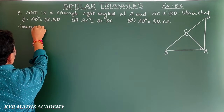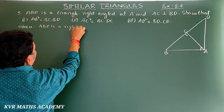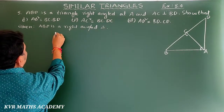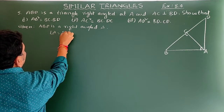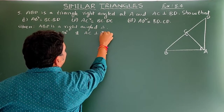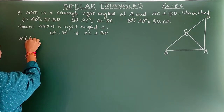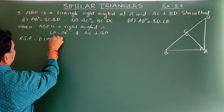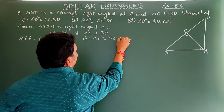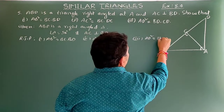Given: ABD is a right-angled triangle with angle A equal to 90 degrees, and AC is perpendicular to BD. We have to prove: first, AB² = BC × BD; second, AC² = BC × DC; and third, AD² = BD × CD.